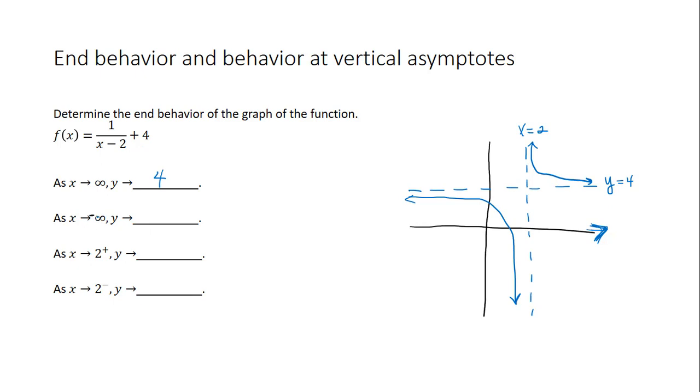And then as x goes to negative infinity, that is what's happening on the left end of the graph, notice that the graph is approaching this horizontal line, which is again y is equal to 4.